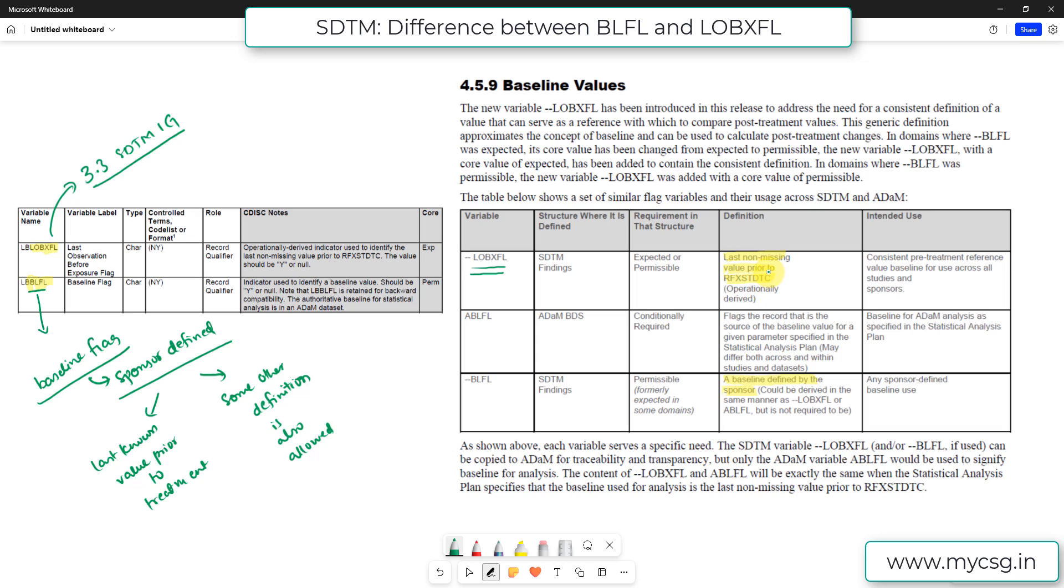But LOBXFL must be populated with the record with last known missing value prior to RFXSTDTC. So if in your study the definition of baseline is last known missing value prior to RFXSTDTC, we can just populate LOBXFL and we need not populate BLFL if you are following SDTM IG 3.3. So that is the basic difference of LOBXFL and BLFL.